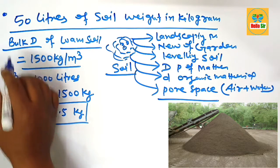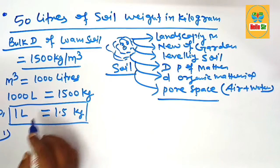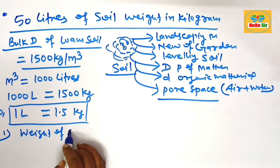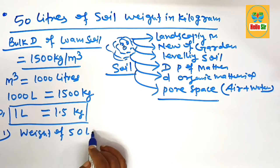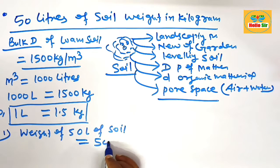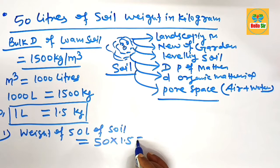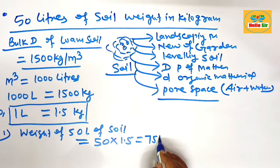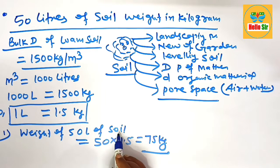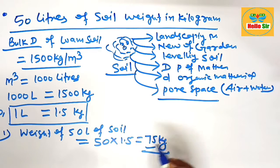The question asks: what is the weight of 50 liters of soil? The weight of 50 liters of soil is 50 multiplied by 1.5, which comes to about 75 kilogram. The typical weight of 50 liters of soil is approximately 75 kilogram.